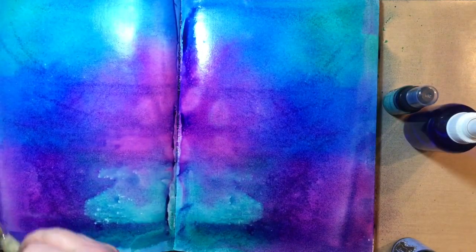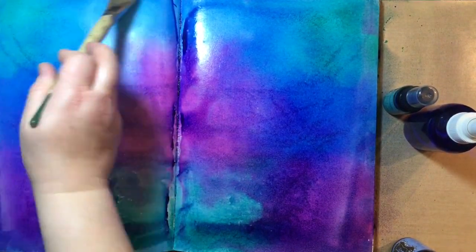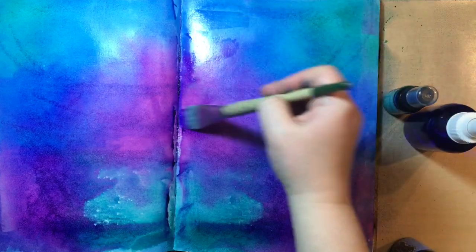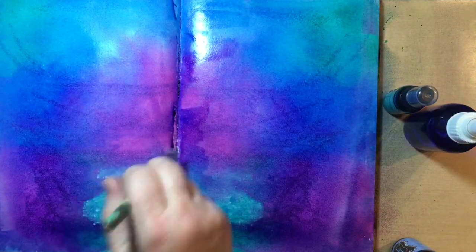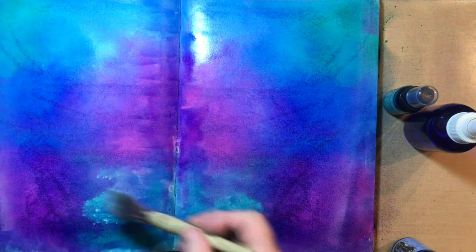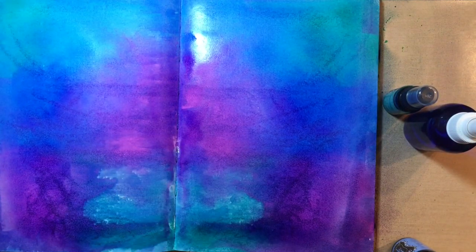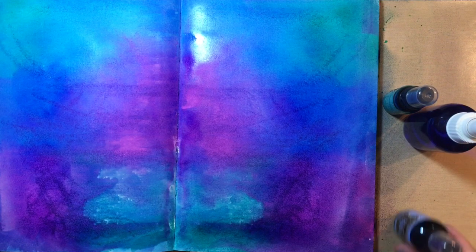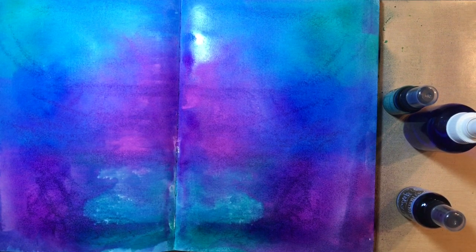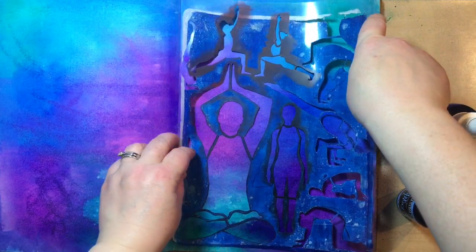As you see here, I'm taking a wide paint brush and just getting the areas of ink that are pulling towards the crack or the spine of the book, spreading those out and making sure that everything was covered.